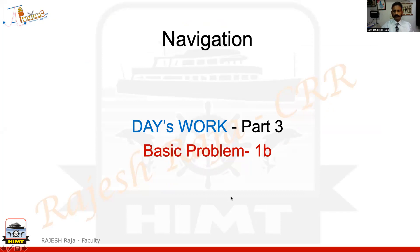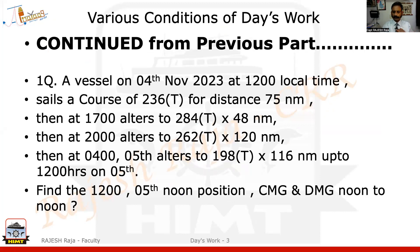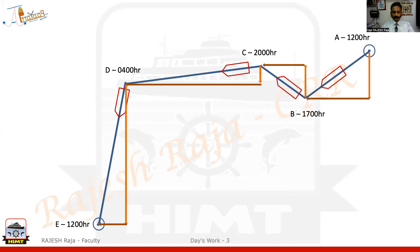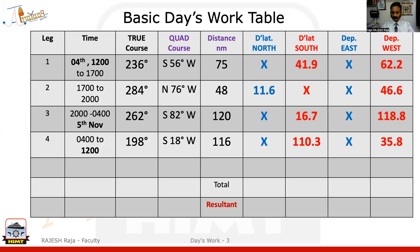A quick recap of what the question was — it was a question on a simple day's work. I'm not going to repeat everything; I'll just quickly run through what was done last time. We had a couple of legs, and the aim was to find the noon position as well as CMG and DMG — what was done between noon to noon. I'm going to calculate the CMG and DMG in this video and leave the noon position to the last video. These were the different legs of sailing. We broke each leg into D-lat and departure and filled up the table.